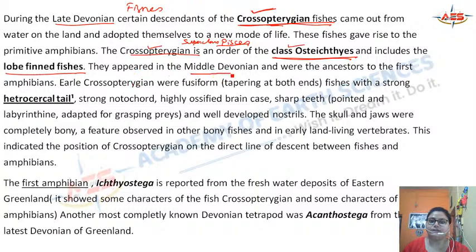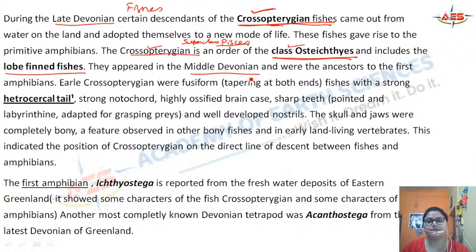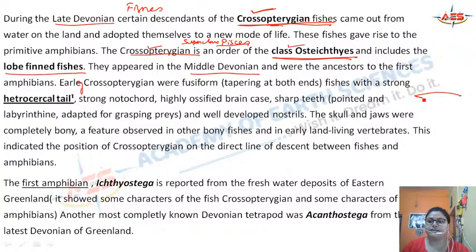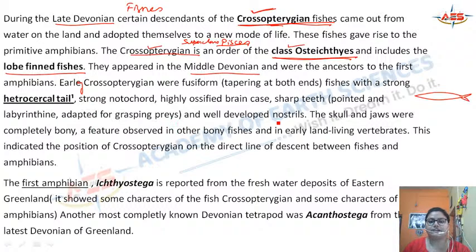The crossopterygians appeared in the middle Devonian and were the ancestors to the first amphibians. The early crossopterygians were fusiform — they had a tapering, fish-like body tapered at both ends — with a strong heterocercal tail, strong notochord, highly ossified brain case, sharp teeth, and well-developed nostrils.